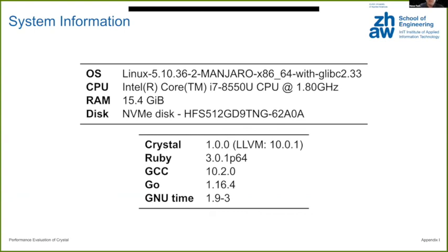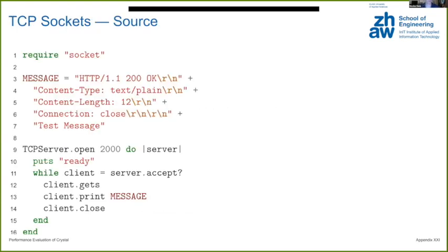How was the TCP socket benchmark done? There's just one plain text string that was predefined and it just waits for a client to connect, then prints that message and closes again. I used a HTTP benchmarking tool called Siege, and a fixed amount of calls was made and I measured how long it took.